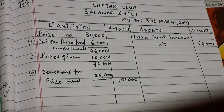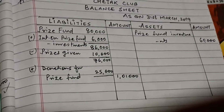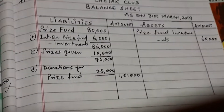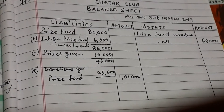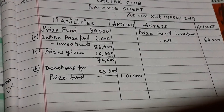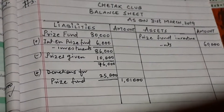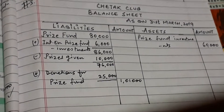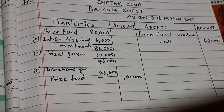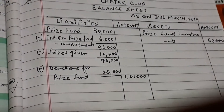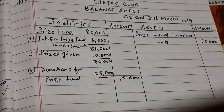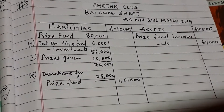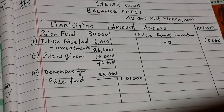Price fund investment on 1st April 2018 is given as 60,000. Price fund investment is an asset, so it will be recorded on the credit side, meaning the assets side. Then the last item — donations for price fund — is added with the price fund amount.